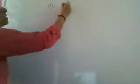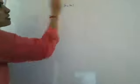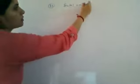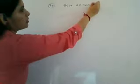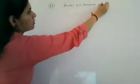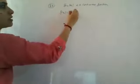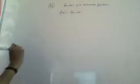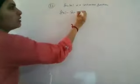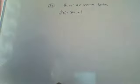Question number 33: examine that sine of mod x is a continuous function. For sine of mod x, we will take the question as f of x equals sine of mod x. We have to take two functions h and g so that one of the compositions will give you the function f.